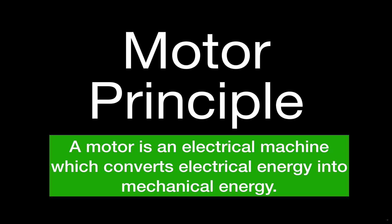A generator converts mechanical energy into electrical energy — you turn the coil mechanically and it causes a current to flow. The motor is the opposite: you put a current into the coil, and then the coil will turn.